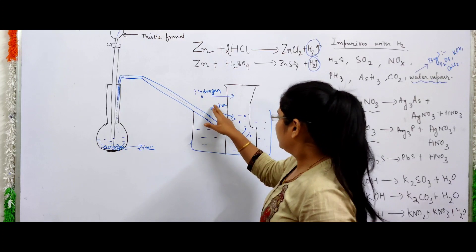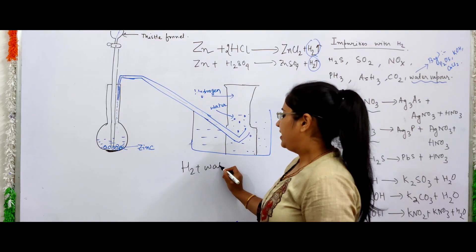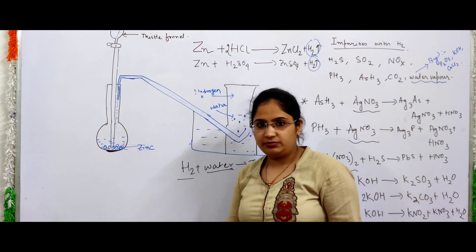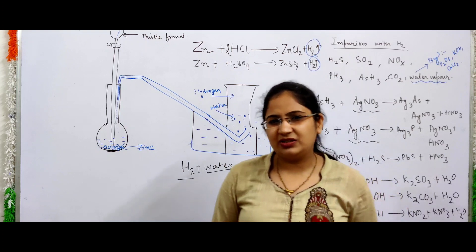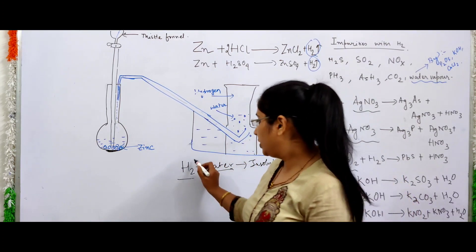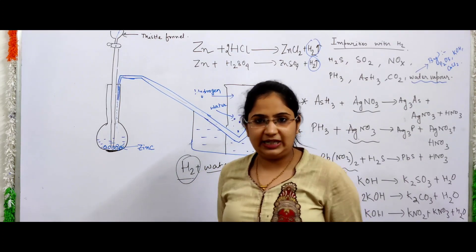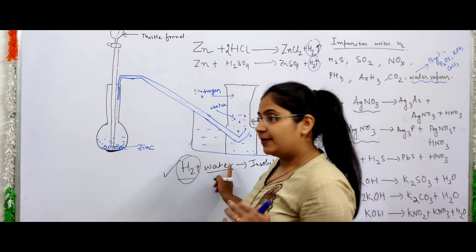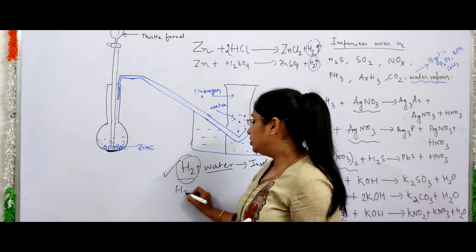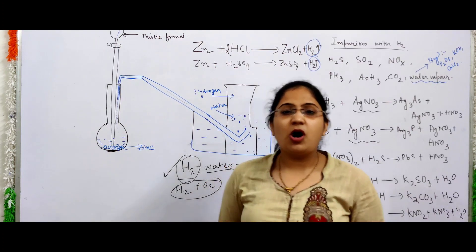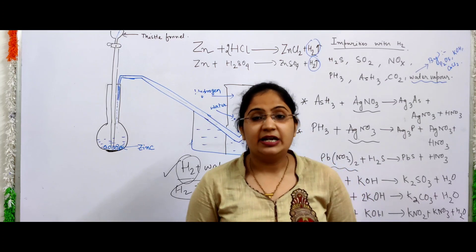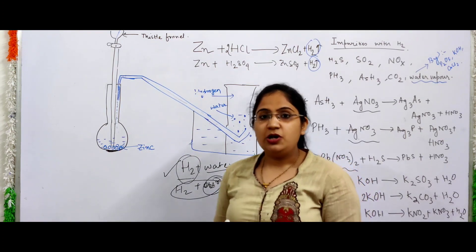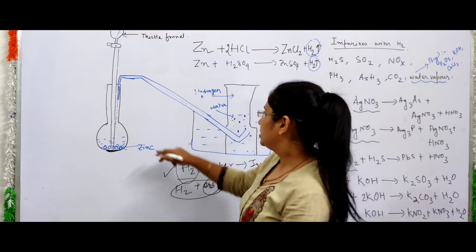Hydrogen and water form an insoluble mixture — hydrogen doesn't dissolve in water. Water is a polar compound and hydrogen is a non-polar molecule, so they don't mix. Since hydrogen doesn't dissolve, we can easily collect it. The second reason is that we don't collect hydrogen in air because hydrogen and oxygen in air would cause a very explosive reaction. So hydrogen gas is collected in water, not in air — this is very important.